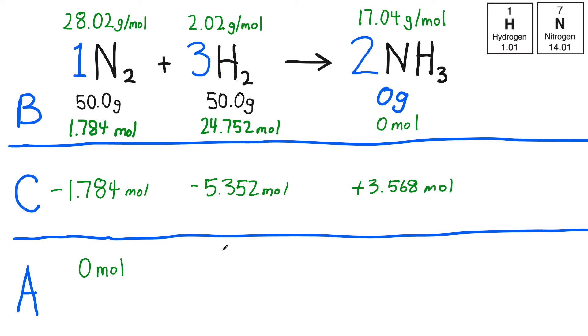To figure out how much H2 I have left, I need to take the starting quantity, 24.752 moles, subtract the amount that reacted to figure out how much is left. 24.752 minus 5.352 is 19.400 moles. That's too many significant figures, but I'm going to take care of that in the final step. And it's pretty easy to determine how much NH3 is present after the reaction occurs because that's 3.568 moles that was produced in the reaction.